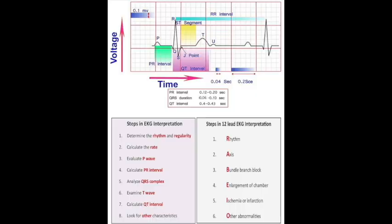Now we'll go through EKGs and the different steps to analyze them. Step one: determine the rhythm — is it regular or irregular? Use the rhythm strip and check R-to-R intervals. If under 120 milliseconds variation, we consider it a regular rhythm.